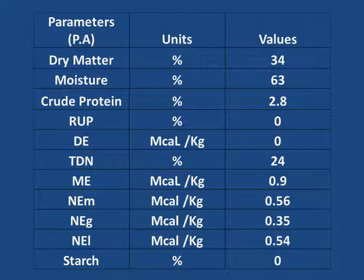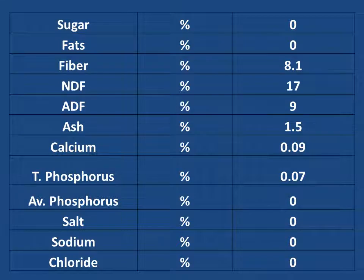Dry matter percentage: 34%. Moisture percentage: 43%. Crude protein: 2.8%. Rumen undegradable protein percentage: 0%. Digestible energy: mega calories per kg: 0%. Total digestible nutrients percentage: 24%. Metabolizable energy: mega calories per kg: 0.9%. Net energy for maintenance: mega calories per kg: 0.56%. Net energy for gain: mega calories per kg: 0.35%. Net energy for lactation: mega calories per kg: 0.54%.